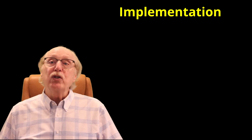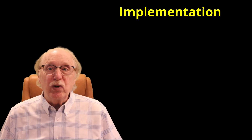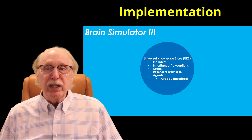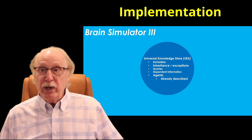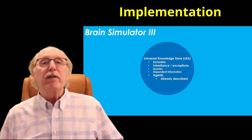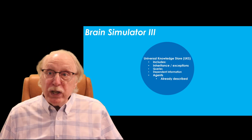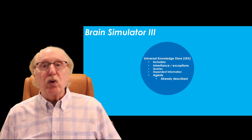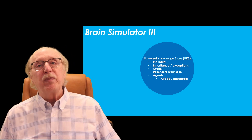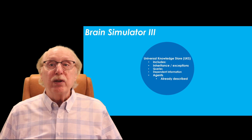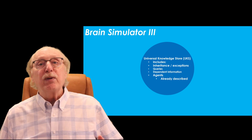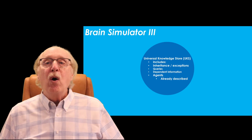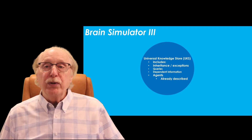This video now turns toward how we are implementing this structure in software in the Brain Simulator 3 project. At the core of Brain Simulator 3 is the Universal Knowledge Store, or UKS. You can think of it as the brain's memory and reasoning hub — a single unified repository where all information is stored as interconnected nodes and relationships. The UKS isn't just a passive database; it's the place where inheritance, exceptions, bi-directionality, and generalization all come together to create meaningful knowledge.